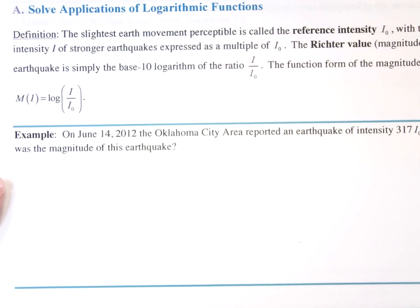Solve applications of logarithmic functions. Definition: The slightest earth movement perceptible is called reference intensity I sub zero, with the intensity I of stronger earthquakes expressed as a multiple of I sub zero. The Richter value magnitude of an earthquake is simply the base ten logarithm of the ratio I divided by I sub zero.